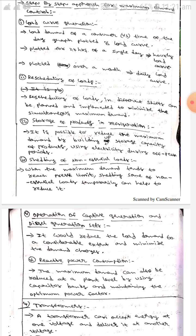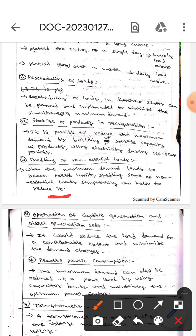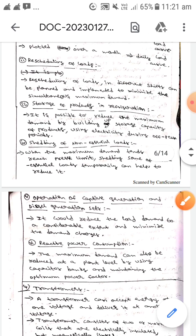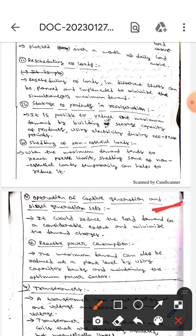The next one is operation of captive generation and diesel generation sets. It will reduce the load demand to a considerable extent and minimize the demand charges.